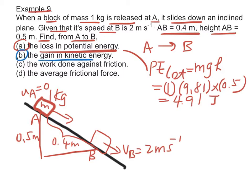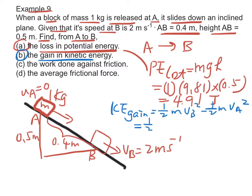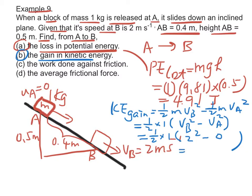Part B: the gain in KE. The gain in KE is equal to ½mVb² minus ½mVa², which is ½ times 1 times (Vb² minus Va²), which is equal to 2 joules.